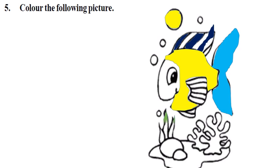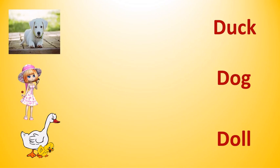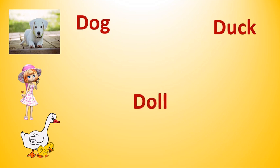Children, observe this picture. In the left side some words are given, in right side match them. What is the first picture? Dog: D-O-G, dog. What is the second picture? Doll: D-O-L-L, doll. And third picture, duck: D-U-C-K, duck.